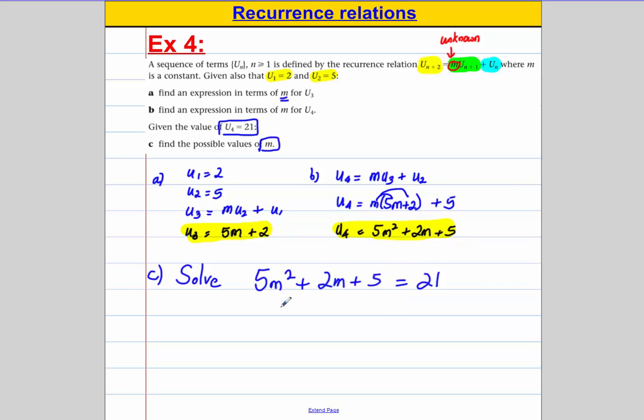It's a quadratic, so I'm going to take 21 off both sides. 5m squared, add 2m, subtract and that's going to be 16 is equal to 0. And now we're going to try and factorise this if possible.